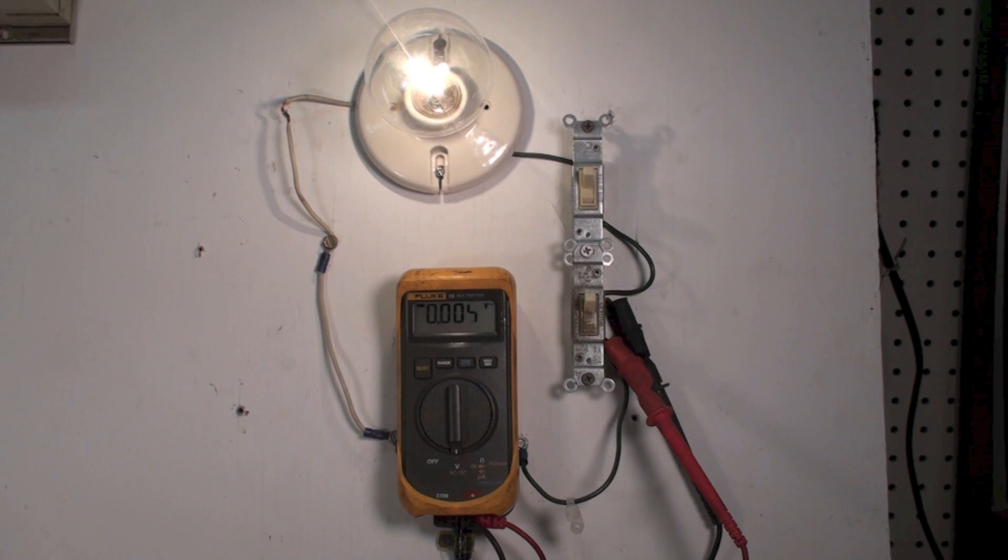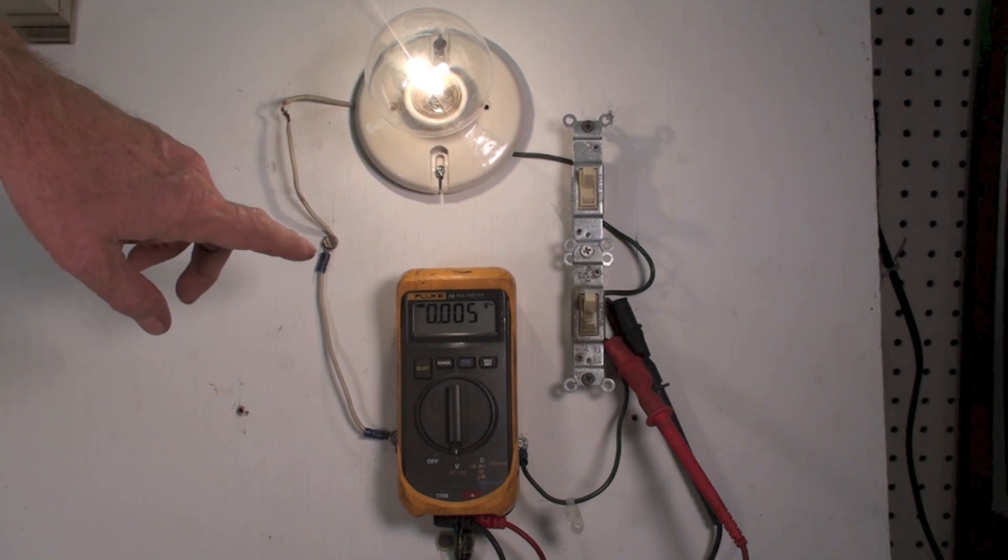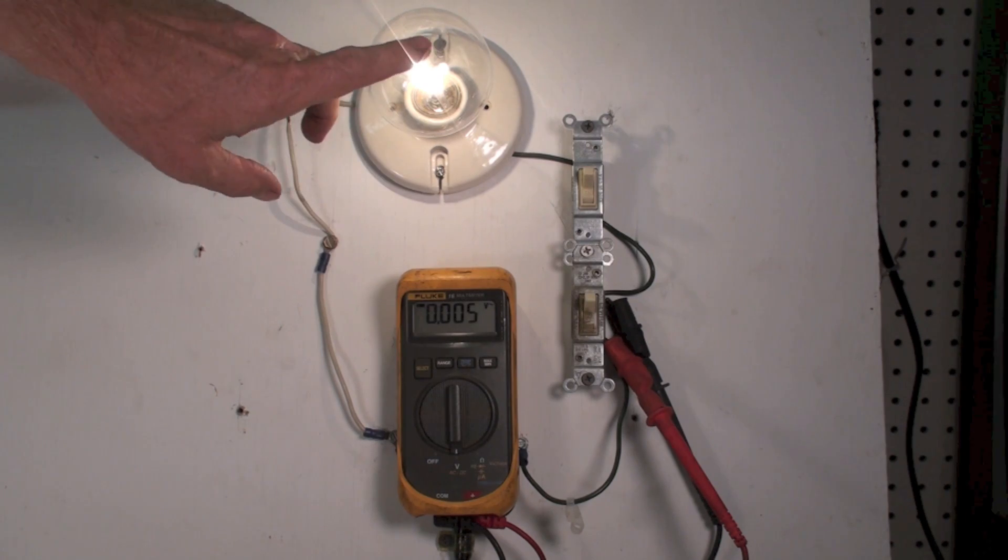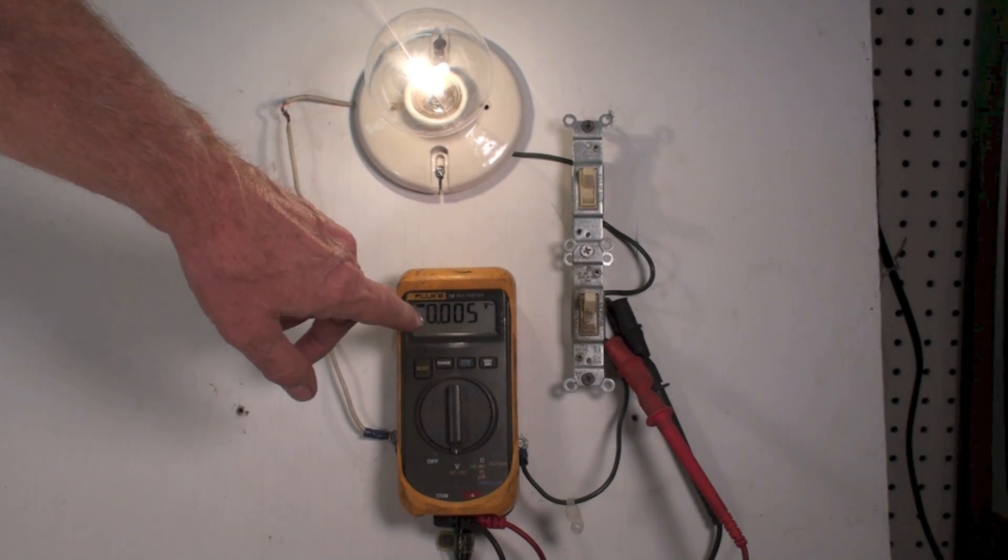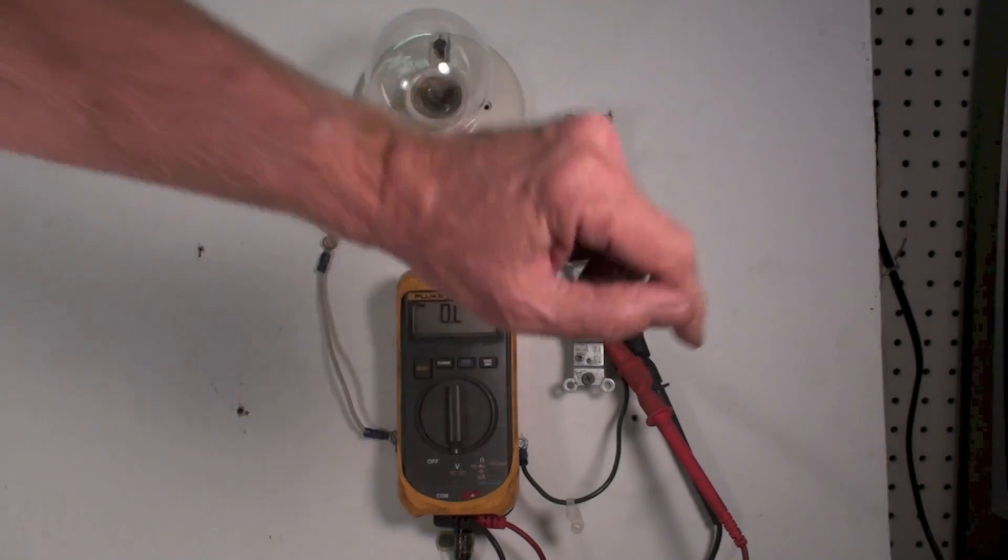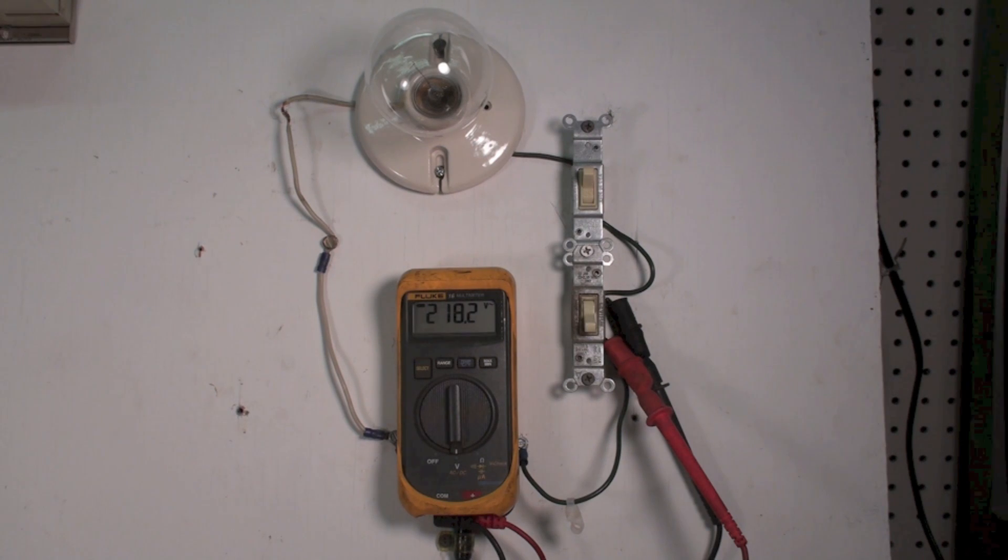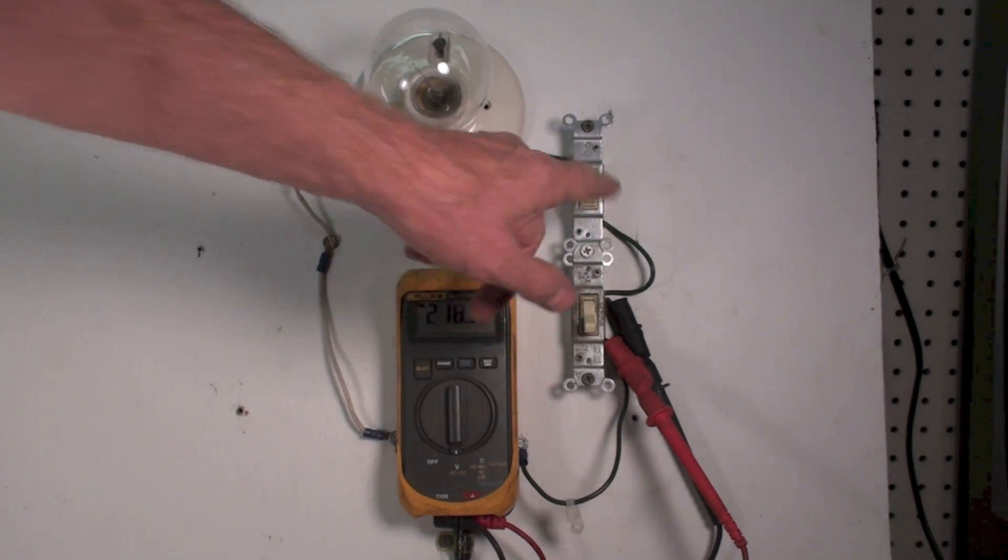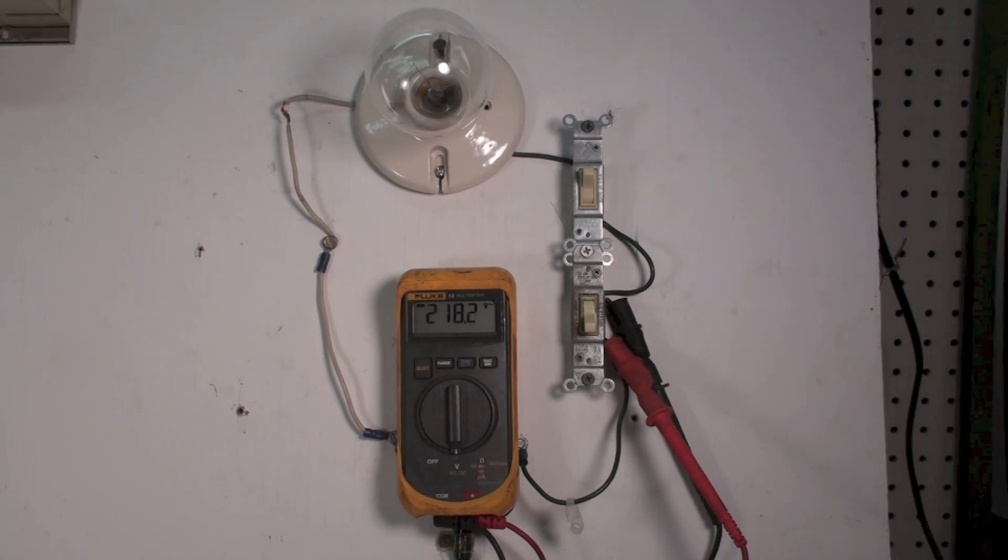Both of these switches have to be on for this thing to work. So I turn this one on and now I'm working. The load is working, I'm still reading zero. The only way I can read the line voltage is to shut this switch off and leave this switch on, and the load is still good.